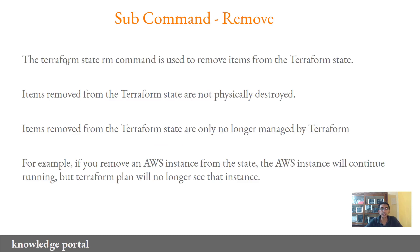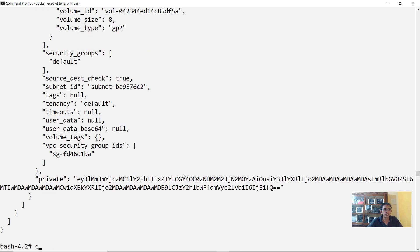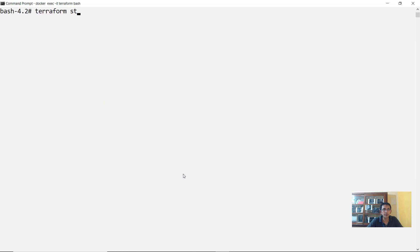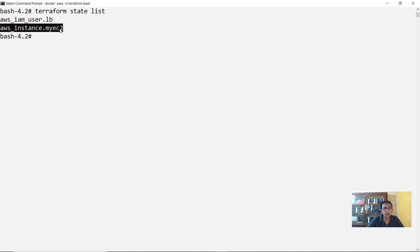The next subcommand is remove. The Terraform state rm command is used to remove items from a Terraform state. Items removed from the Terraform state are not physically destroyed in the service provider. They are simply no longer managed by Terraform. For example, if you remove an AWS instance from the state file, the instance will continue to run but Terraform plan will no longer see that specific instance. Running Terraform state list and then Terraform state rm aws_instance.my_ec2 will remove it from the state.